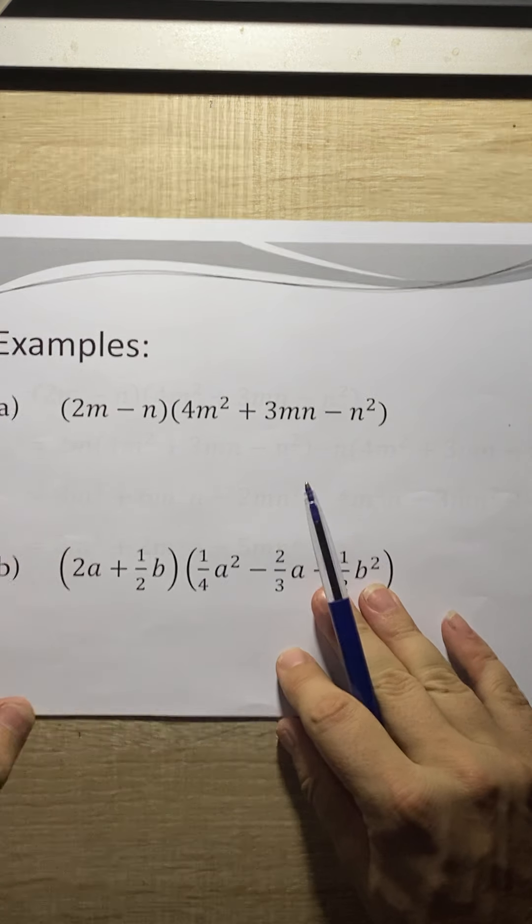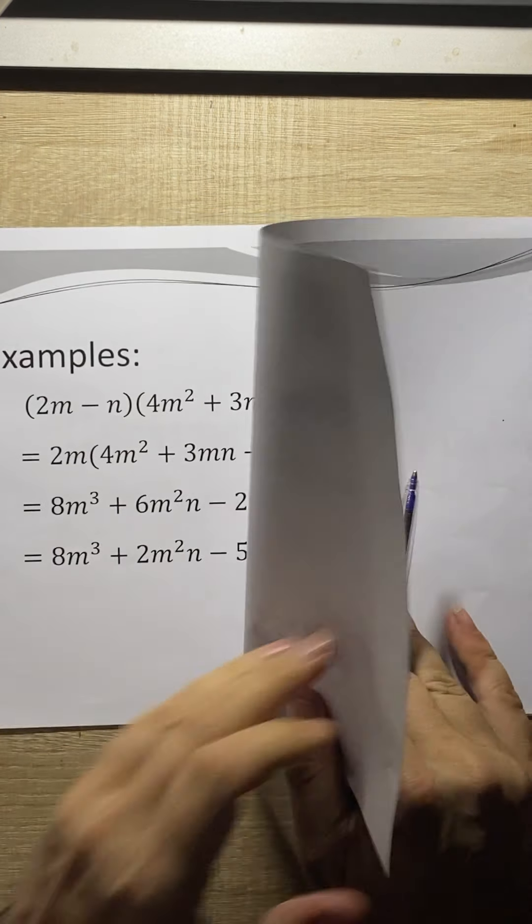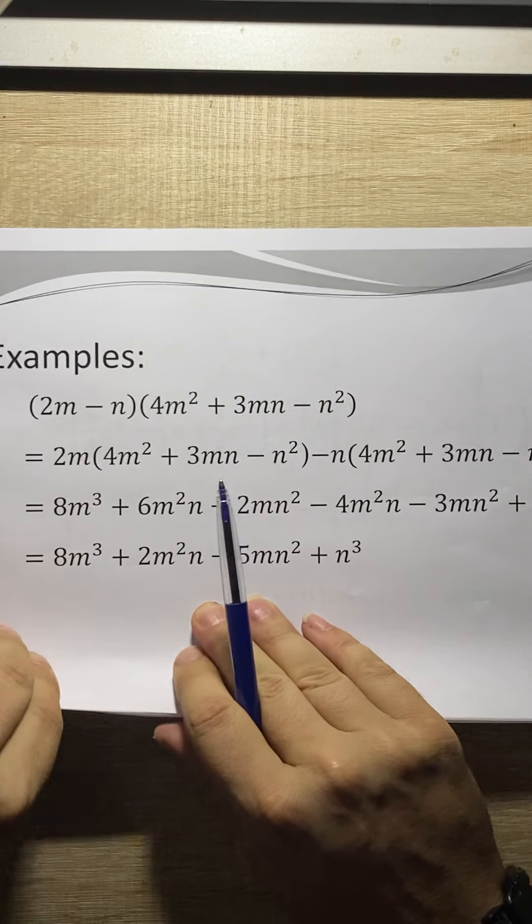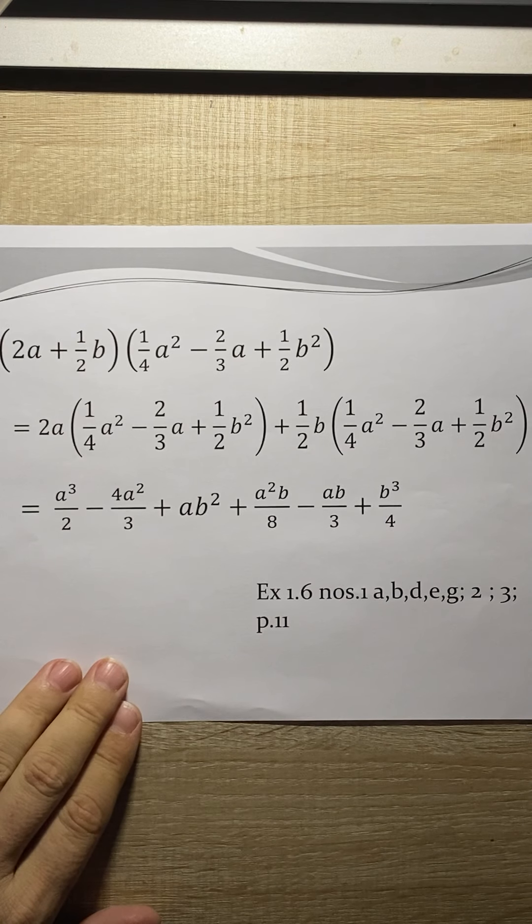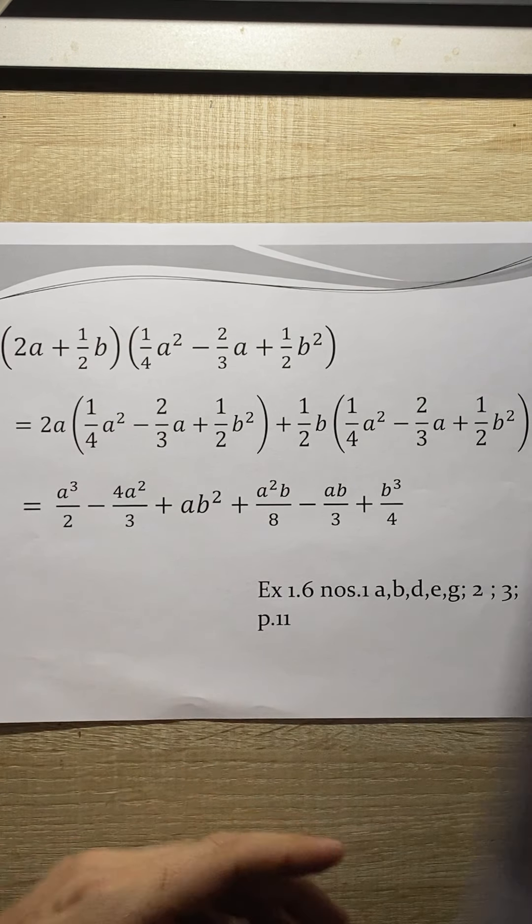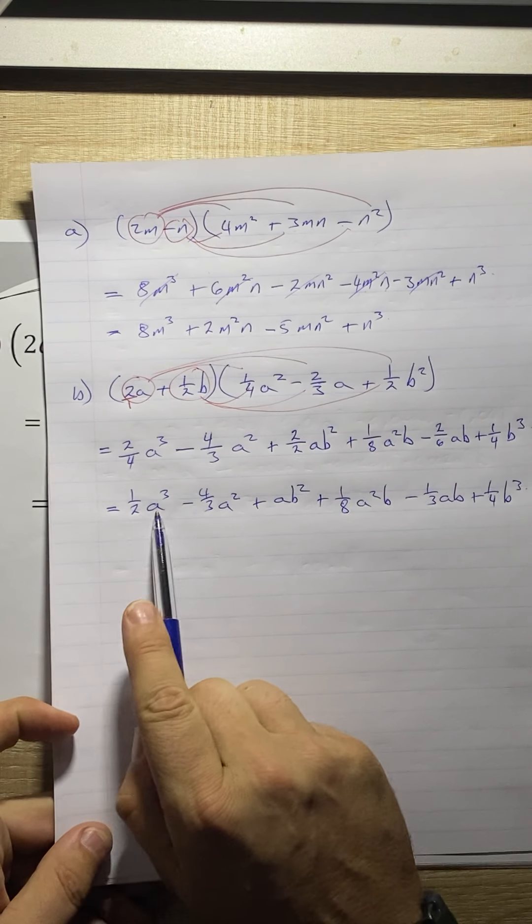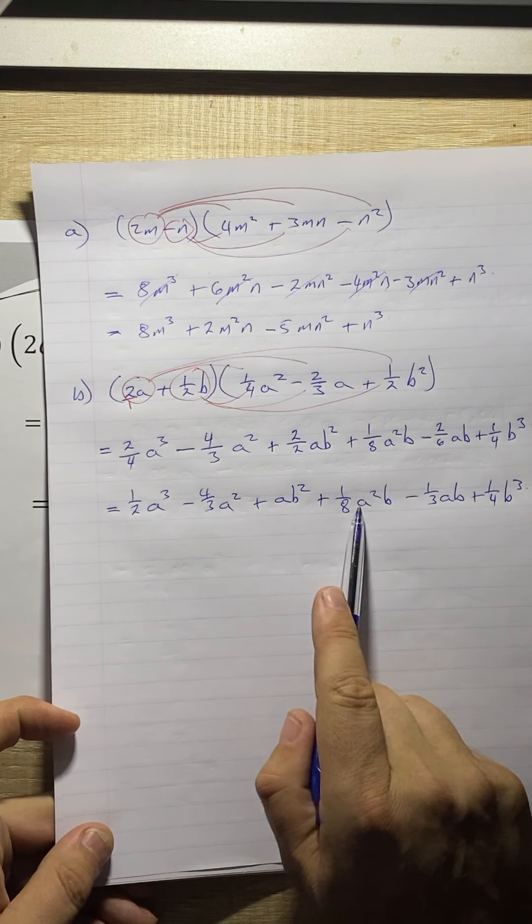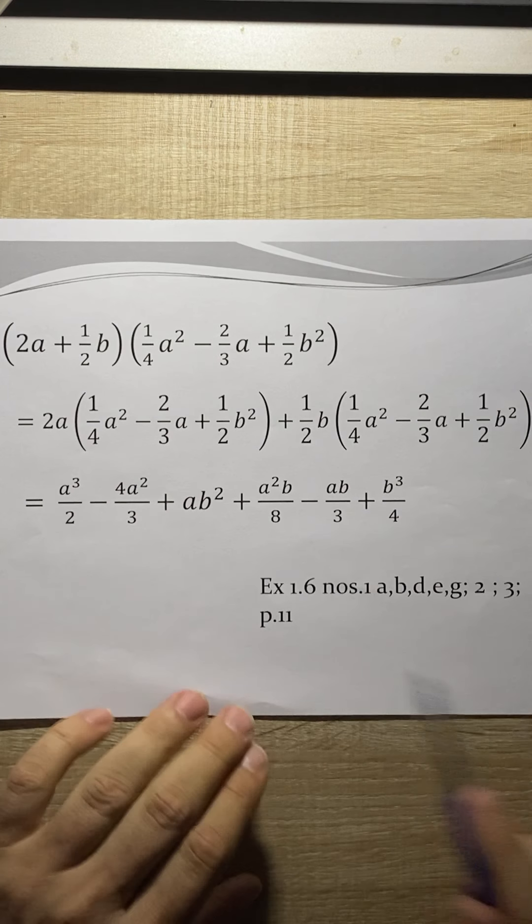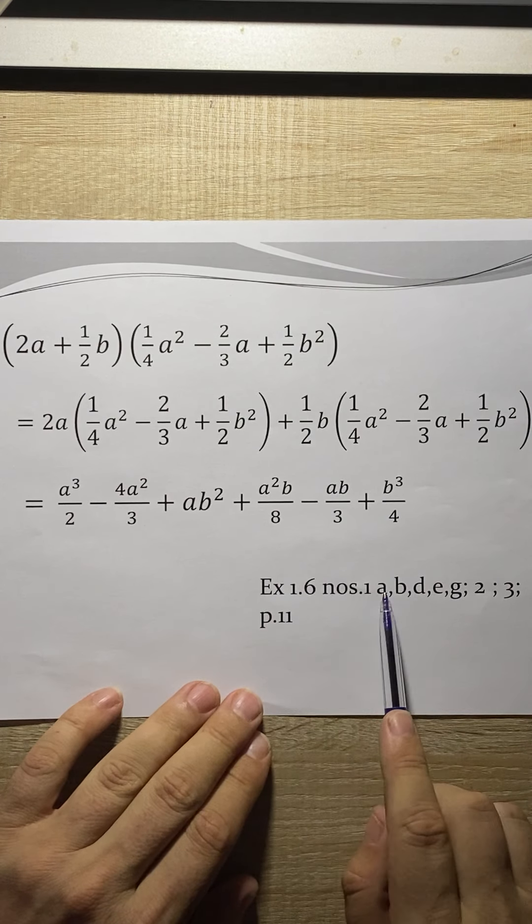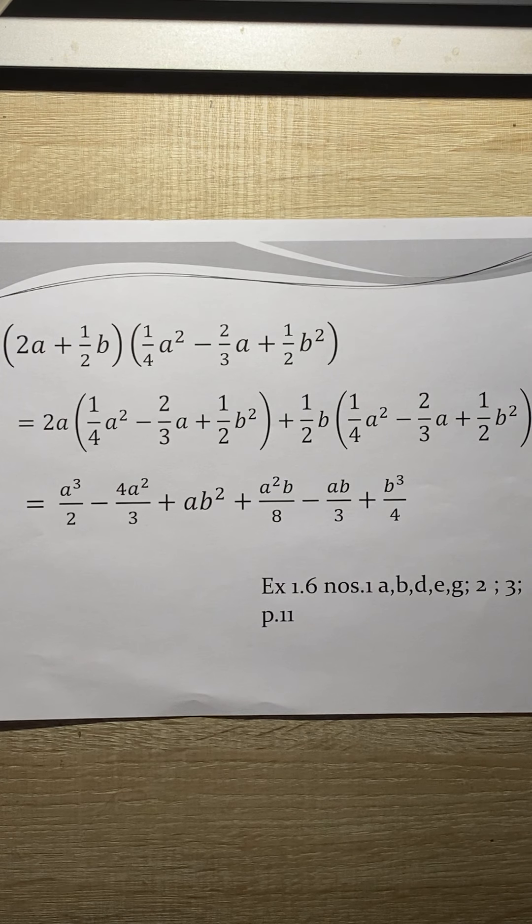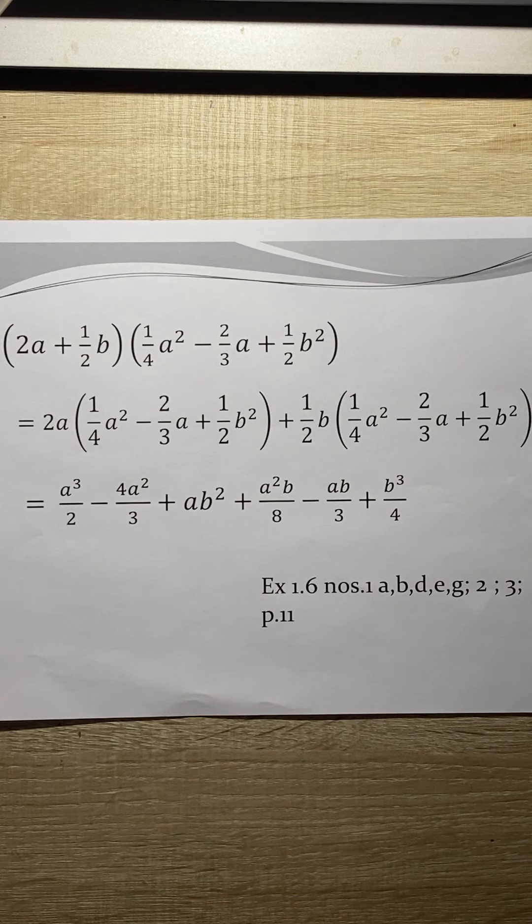And then I think the next slide is just the solutions, which we've got. Right, so grade 10s, I would prefer it if you wrote your fractions like this, with your variables next to it. Try and avoid doing it this way. Right, so for homework, number 1.6, number 1 a, b, d, e, g, 2, and 3 for me, please. Grade 10s, thank you so much.